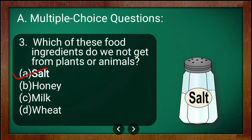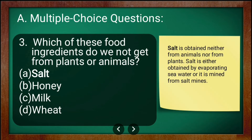Salt is obtained neither from animals nor from plants. Salt is either obtained by evaporating sea water, or it is mined from salt mines.